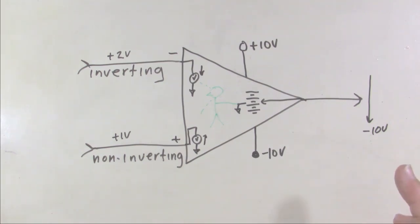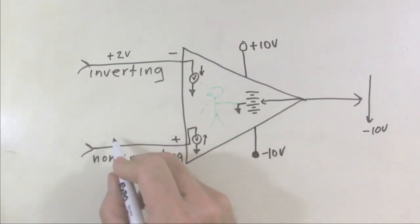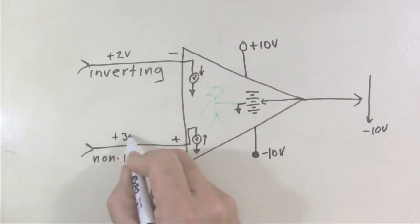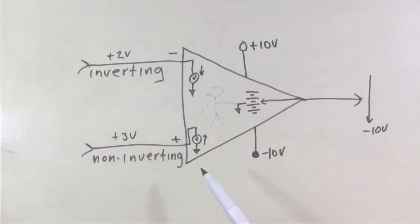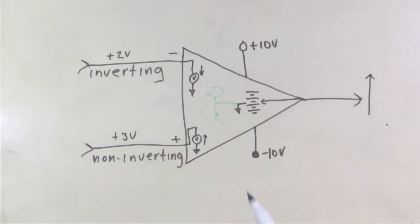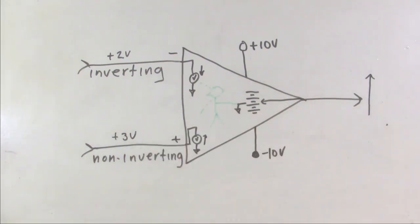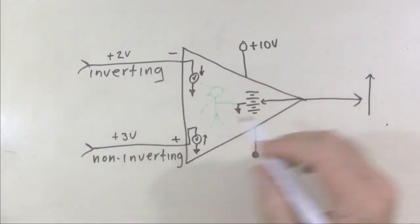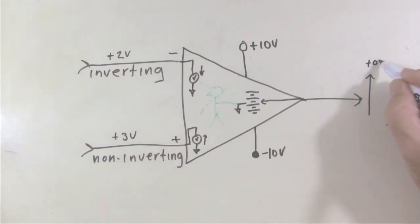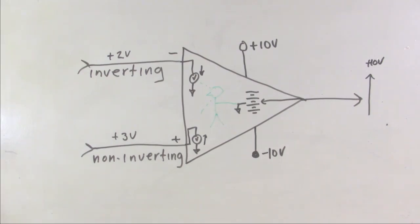Now let's make a change to where the non-inverting input is the higher voltage. Now the voltage at the non-inverting input is higher than the voltage at the inverting input. His instructions are to crank his voltage upwards until either these become equal or he reaches his upper limit. Nothing he does at the output is going to have an effect on the input, so he's going to keep going up and up until he reaches positive 10 volts. Sorry boss, that's as far as I can go.